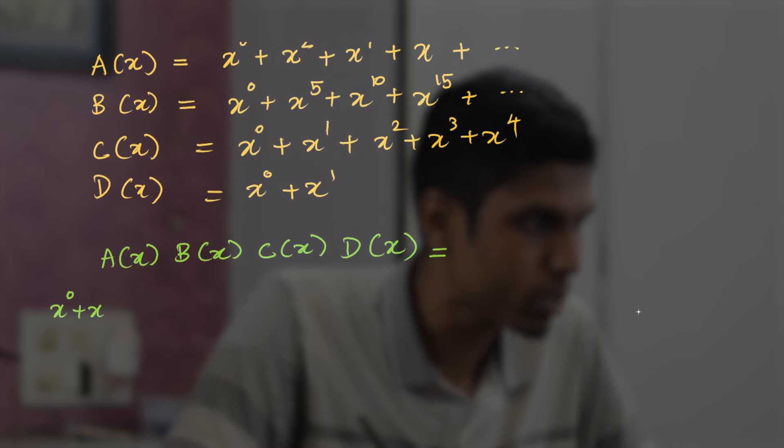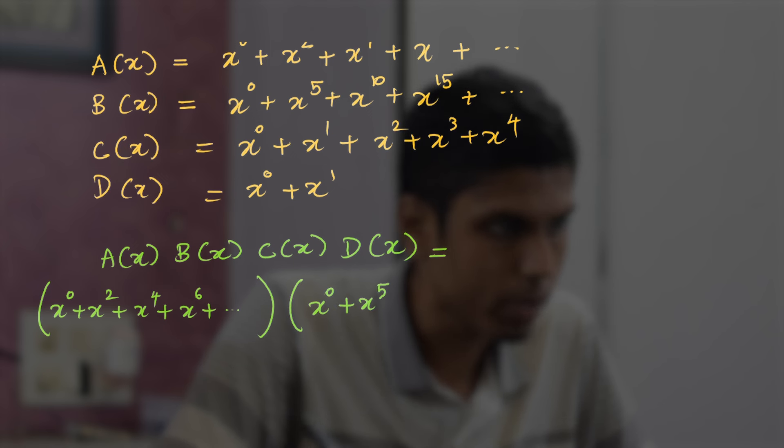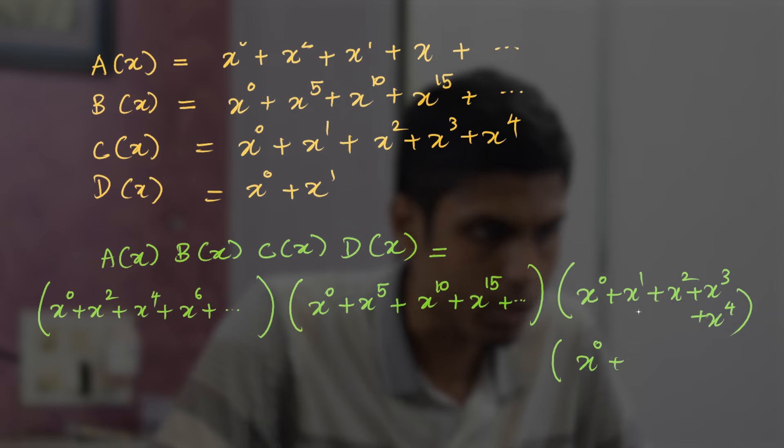So how exactly does this work? Let's write the expansion. Clear this: it's x^0 + x^2 + x^4 + x^6 and so on, and B(x) would be x^0 + x^5 + x^10 + x^15 and so on, and C(x) is x^0 + x^1 + x^2 + x^3 + x^4, and finally D(x) is x^0 + x^1.